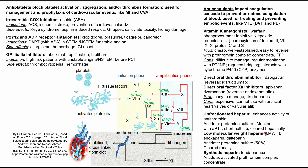Next, low molecular weight heparin — LMWH — which includes enoxaparin and dalteparin. The antidote is still protamine sulfate, although it's less effective here, around 50%. This one is cleared renally. Sometimes your choice between unfractionated heparin and LMWH depends on whether the patient has liver or kidney damage — if they have liver damage, avoid unfractionated heparin; if they have kidney damage, avoid LMWH or enoxaparin.